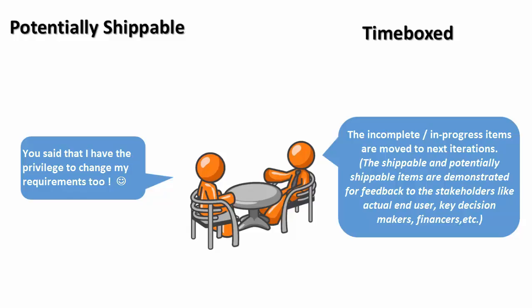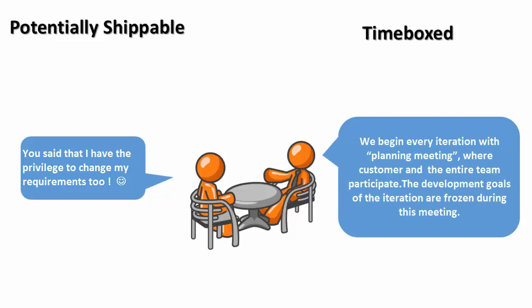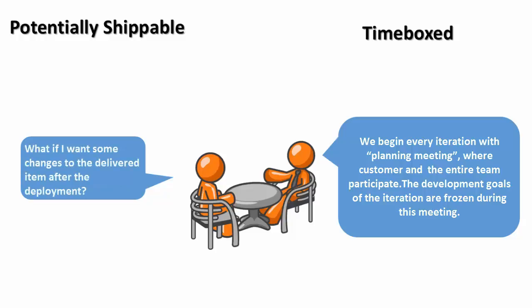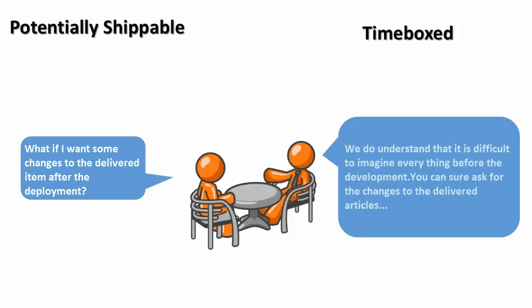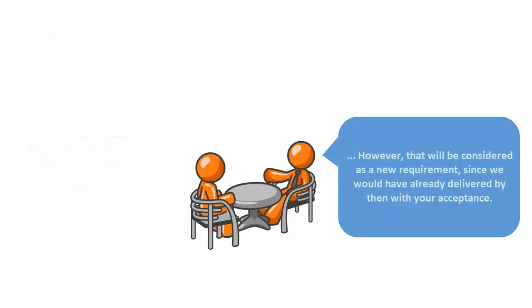You said I have the privilege to change my requirements. We welcome changing requirements and make the customer a part of our team. We begin every iteration with a planning meeting where the customer and the entire team participate. The development goals for the iteration are frozen during this meeting. What if I want changes to delivered items after deployment? You can ask for changes to delivered articles; however, that will be considered a new requirement since we would have already delivered with your acceptance.